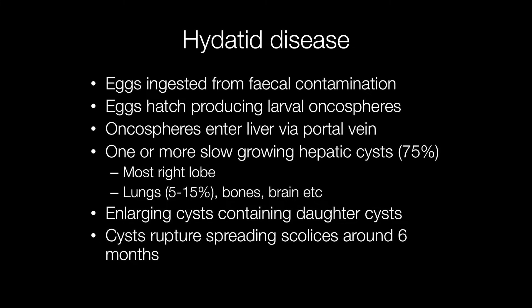Grazing animals such as sheep, kangaroos or moose may ingest the eggs while grazing, and humans are no exception as accidental intermediate hosts — they may also ingest eggs from contaminated fingers or food. Once ingested, the eggs develop into onchospheres that enter the liver via the portal vein. Around 75% of Hydatid cysts arise in the liver, usually the right lobe. A smaller proportion — 5 to 15% — may occur in the lungs, and Hydatid cysts can also occur in the bones, brain, kidneys, and elsewhere.